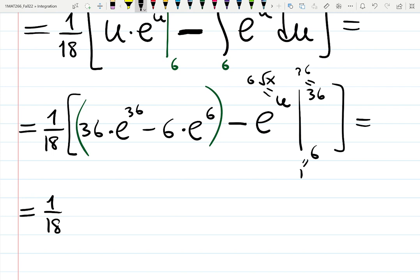We did change limits of integration specifically for the reason not to be bothered at the very end. Besides, the answer will be finite, not just a constant, so nobody cares how you got this constant using which variable—u, x, or w.